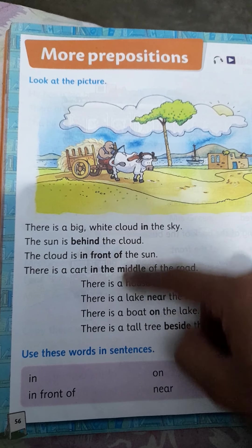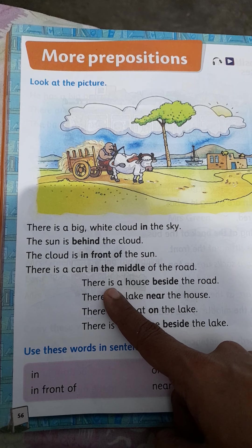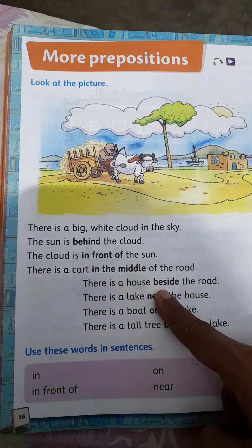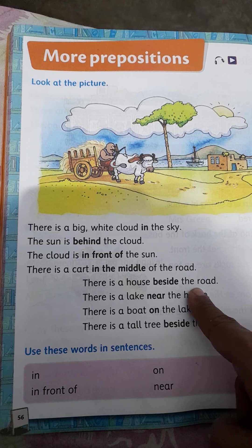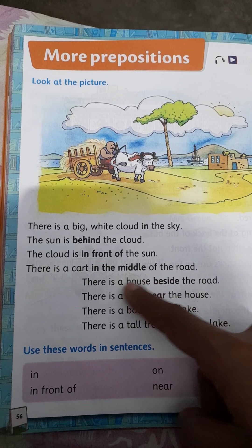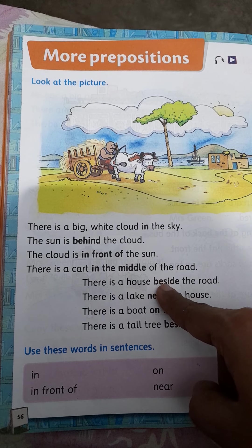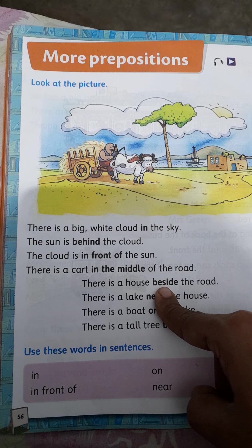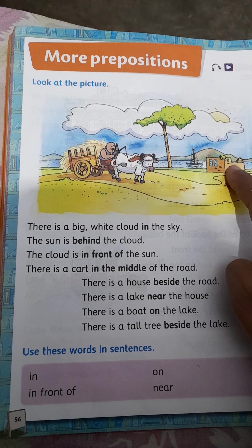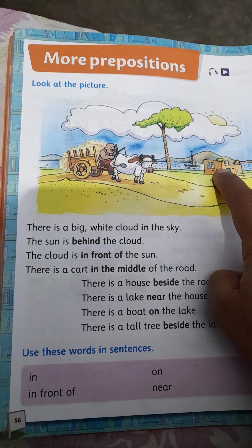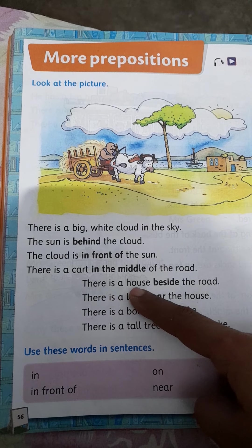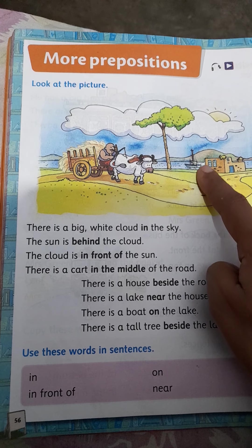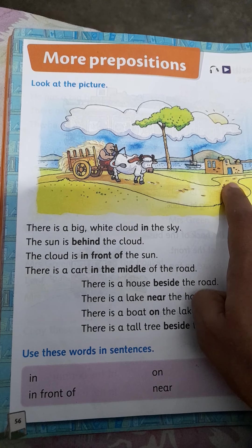Road ke beech mein gadi hai. Yeh aap ki road hai, sadak hai, is ke beech mein gadi hai. T-H-E-R-E there, I-S is, a H-O-U-S-E house, B-E-S-I-D-E beside, T-H-E the, R-O-A-D road. There is a house beside the road. Beside means bagal mein, kinaare. Yeh road hai, iske beside mein bagal mein yeh house hai, ghur hai. Road ke beside mein bagal mein makaan hai.